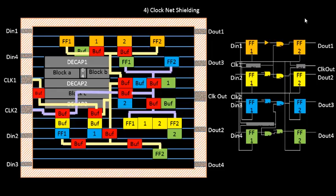Let's continue our discussion. We were at a point where we have built the clock tree, and the clock tree was built in such a fashion that it maintained zero skew between the launch flop and the capture flop. By skew, we mean the latency difference — the clock port to this particular flip-flop clock pin minus the clock port to the other flip-flop clock pin — that difference is basically the skew.